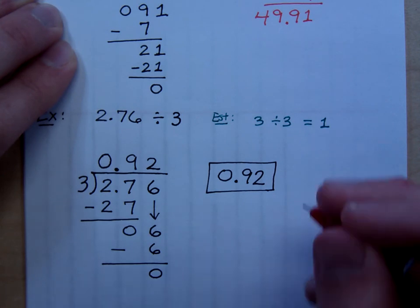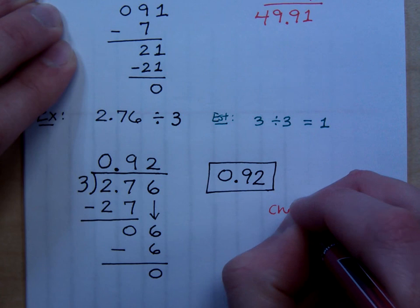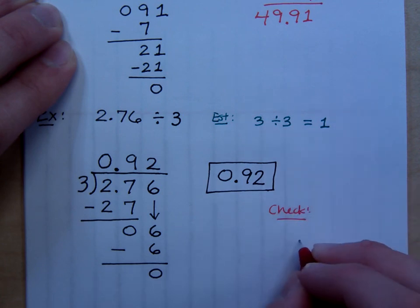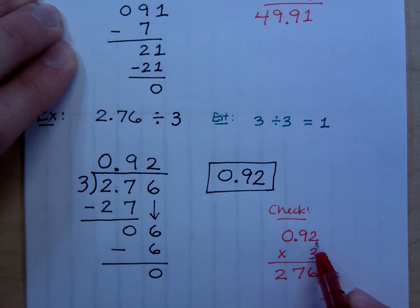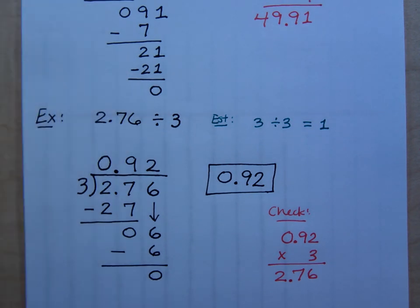And again, if you want to check this, it shouldn't take too long to just come over here to the side and take the 0.92 times the divisor of 3. So that's 6. 3 times 9 is 27. You have two decimal places here, none here. And I have two in my answer, so I do get the dividend, which is 2.76.